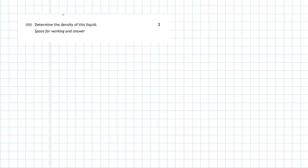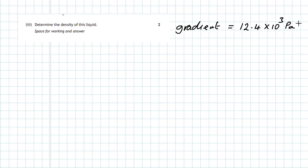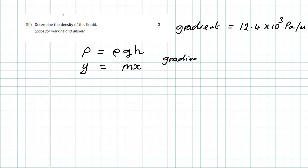Part 3: determine the density of this liquid. The gradient of the graph was found to be 12.4 times 10 to the power 3 pascals per metre. Looking at the equation p equals rho g h, pressure is on the y-axis and depth h is on the x-axis, so this is the equation of a straight line through the origin, y equals m x, meaning the gradient equals the product of density times g.